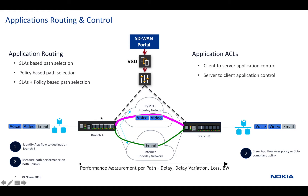One way is using an SLA-based approach where you set up the SLA threshold and the CPE automatically decides whether the application should follow a path that is better in nature — for example, one with low latency like an IP MPLS network — or a best-effort path which is an internet-based part that some applications can follow.